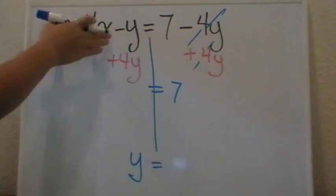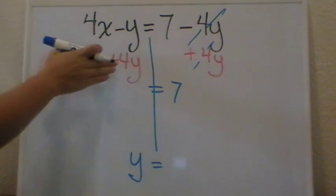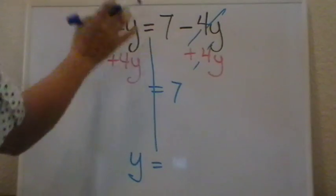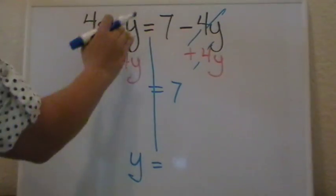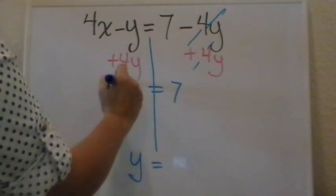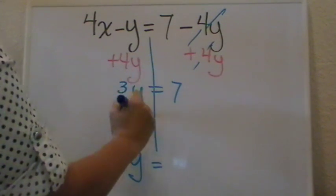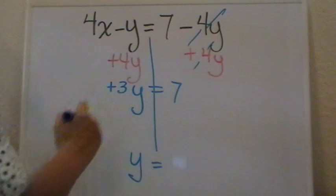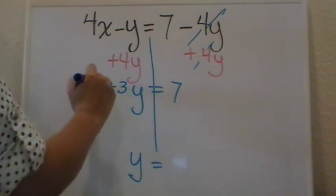And now look what happens here. We have a negative y plus 4y. Don't forget that there's an invisible 1 here—this means negative 1y. So negative 1y plus 4y will give me 3y. And I still have my 4, so don't forget this is positive. And I still have my 4x.